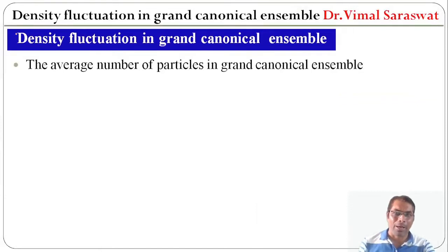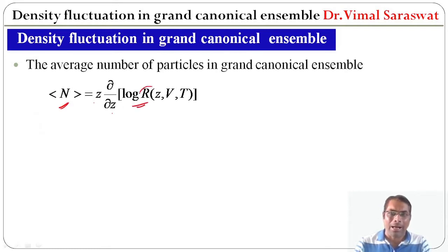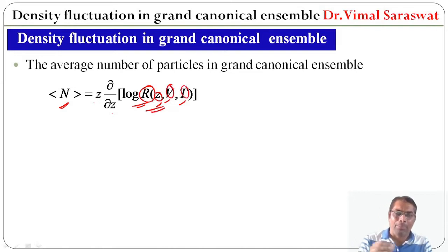The average number of particles in the grand canonical ensemble is given by the ensemble average ⟨N⟩ = z · (∂/∂z) log Ω, where Ω is the grand partition function, z is the fugacity, V is the volume, and T is the temperature.